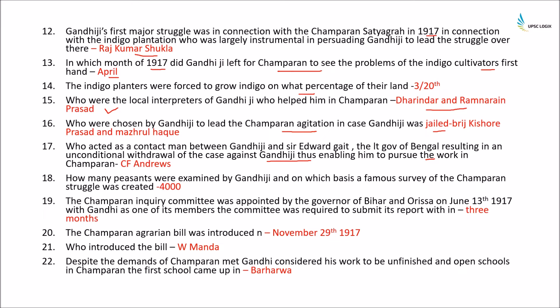Gandhiji examined around 4,000 peasants, which became the basis of the famous survey of Champaran's struggle. The Champaran Inquiry Committee was appointed by the Governor of Bihar and Orissa on June 3rd, 1917, and Gandhiji successfully got himself appointed as one of its members. The committee was required to submit its report within 3 months. The Champaran Agitation Bill was introduced on November 29th, 1917 by W. Manda. Despite demands being met, Gandhiji considered his work unfinished and opened schools in Champaran, the first of which came up in Barharva.